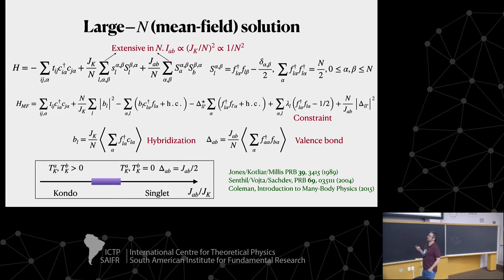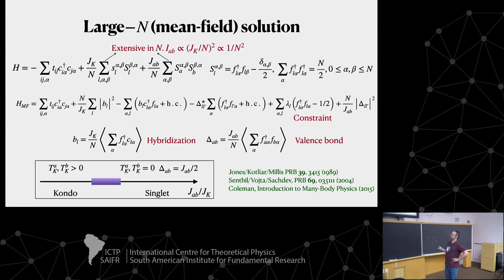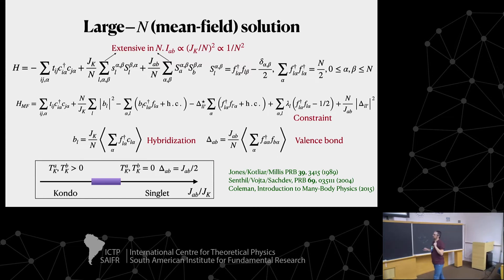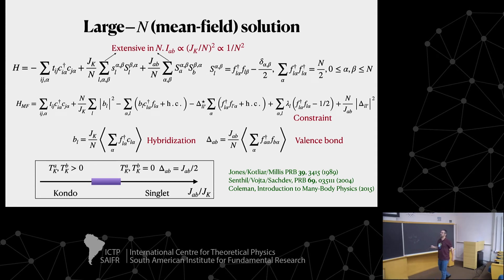I have a bond parameter called the hybridization, which couples the conduction electrons to the local moment on the J_K bond. I also have another mean field parameter living on the bond coupling the two local moments. So the mean field parameters are bond operators living on those bonds. This makes it non-trivial — it's not a simple local mean field theory.